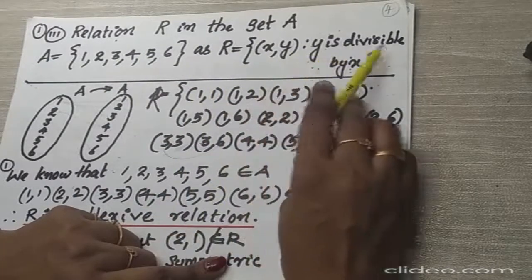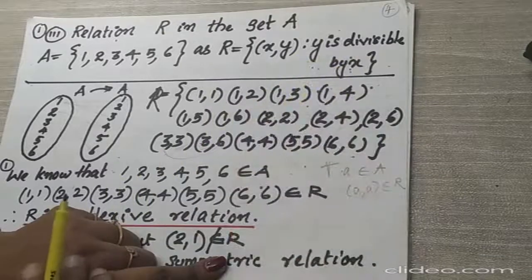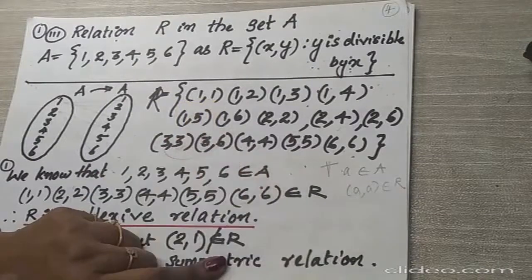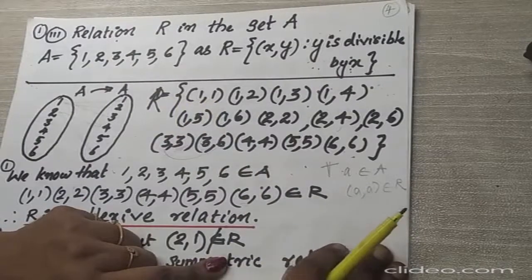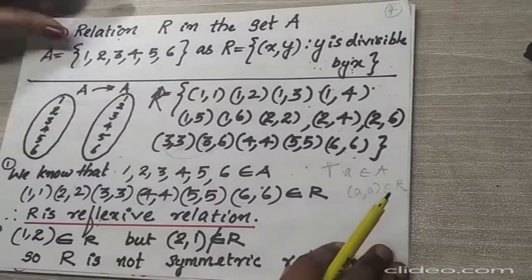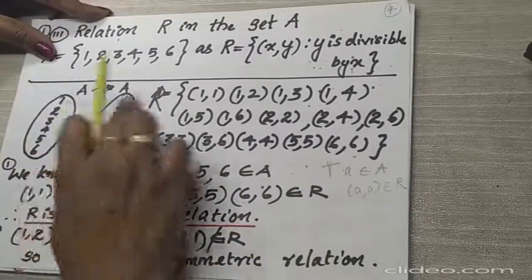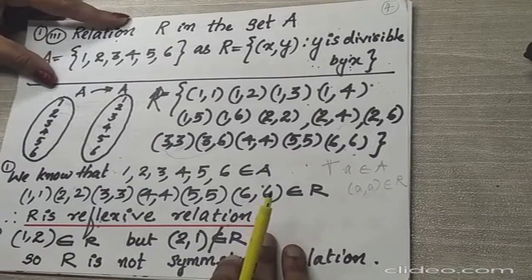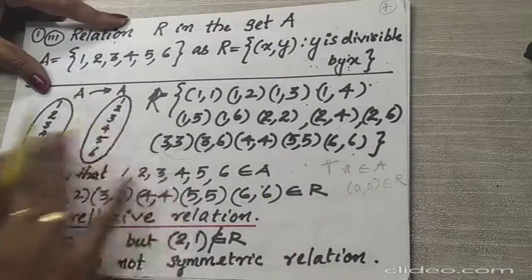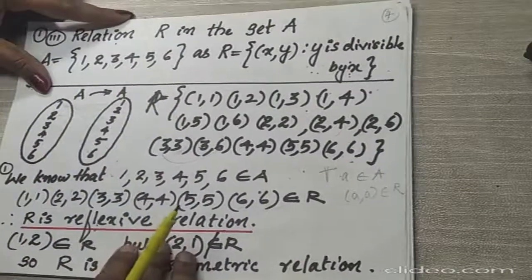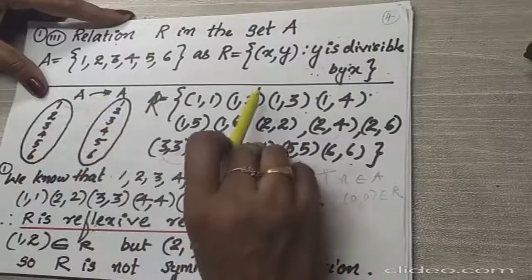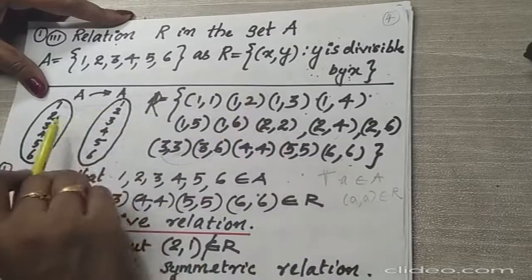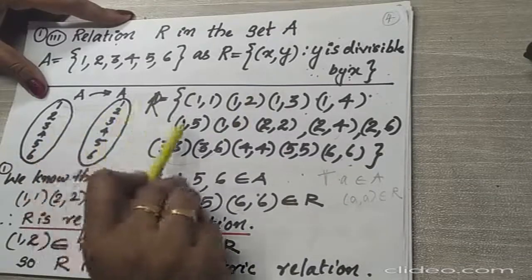Y is divisible by x — meaning in the ordered pair, y should be divisible by x. That is the type of relation we have to consider. I have drawn the set A here. In the cross product, many ordered pairs will be there, but I will show only those which satisfy this condition.